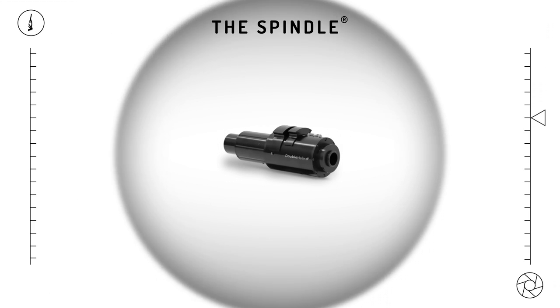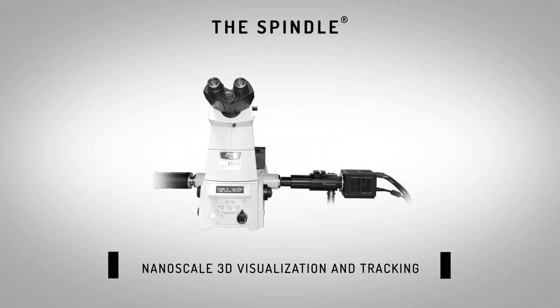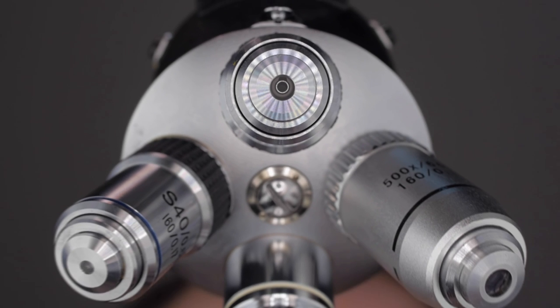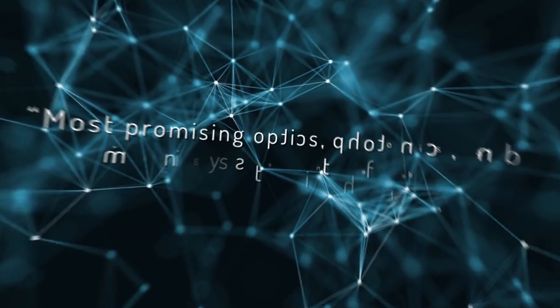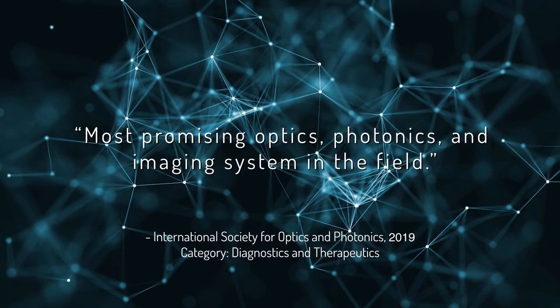In 2017, Double Helix Optics launched the Spindle, revolutionizing the industry by enabling nanoscale 3D visualization and tracking for single molecules and 3D imaging of whole cells. It was a breakthrough achievement, recognized as the most promising optics, photonics, and imaging system in the field.